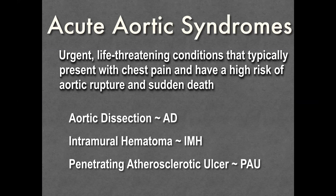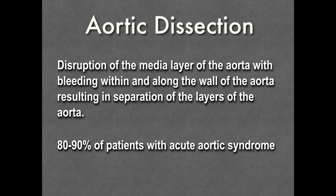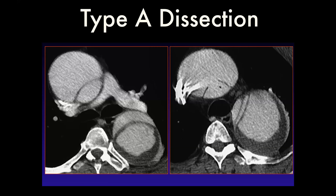Aortic dissection is a disruption of the medial layer of the aorta with bleeding within and along the wall, resulting in separation of the aortic layers. This represents about 80–90% of patients with acute aortic syndrome. Here you can see a classic type A dissection. Type A dissections involve the ascending aorta; type B dissections do not. In this case, the ascending aorta is involved with the intimal-medial complex and an entry tear, with aneurysmal dilation of the descending aorta showing false and true lumens.